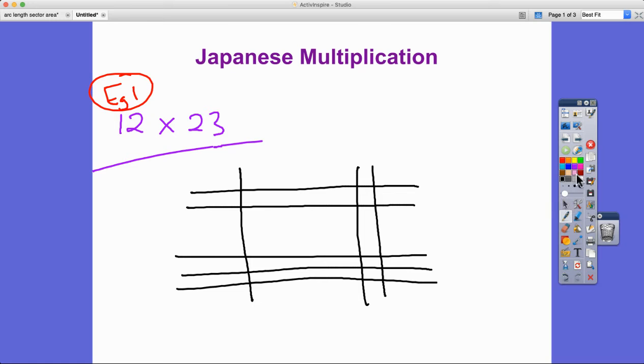Then it's really simple. You start on the bottom right corner and just count the number of intersections. In this case there's six here, there's four here, there's three here, and there's two here.